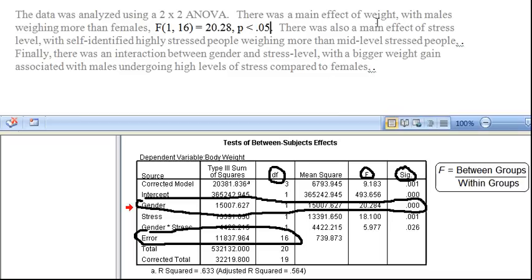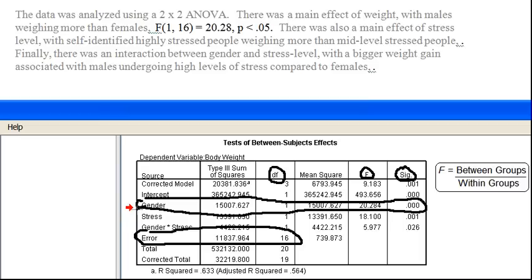Okay, there was also a main effect of stress level, with self-identified highly stressed people weighing more than mid-level stressed people. Okay, so again, should we generalize the results of our sample to the population? Let's look at the results for stress level. Okay, so for stress, the probability that the null hypothesis is true, and this difference in our sample occurred due to sampling error, is .001. That is extremely infrequent. This p-value is less than .05. We're going to be able to reject the null hypothesis.